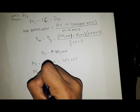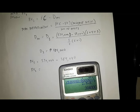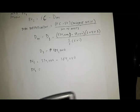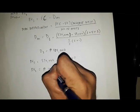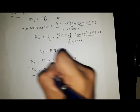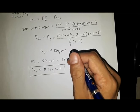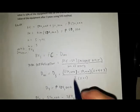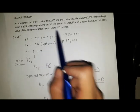Now to find the book value, we subtract the depreciation from the first cost: 530,000 minus 384,000 equals 146,000 pesos. Therefore, the book value of the equipment after three years using the SYD method is 146,000 pesos.